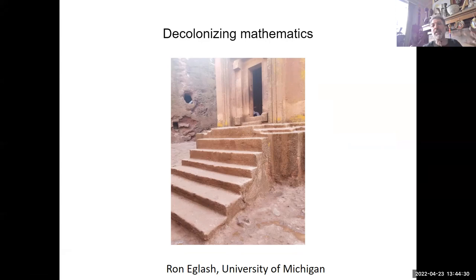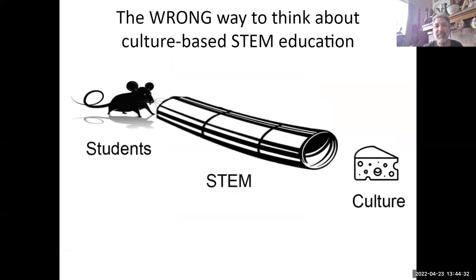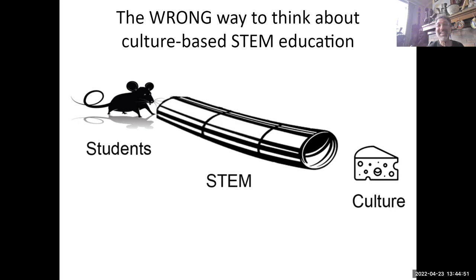Just wanted to get us started thinking about that. In mathematics, I'm often presenting to the National Science Foundation, and they'll say, 'Oh, I get it — so you're trying to trick the kids into the STEM pipeline.' No. The kids are not mice I'm trying to trick into a maze. Culture is not the cheese. That's the wrong way to think about STEM-based education.